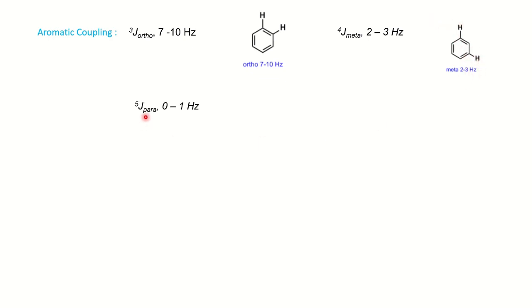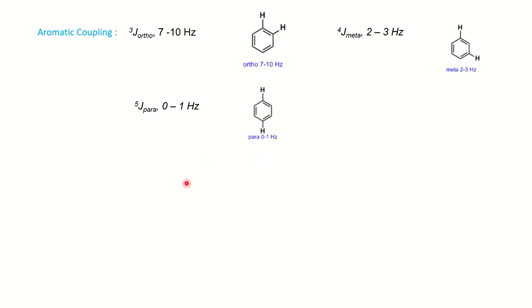Para coupling is a five-bond coupling, so it is weaker than meta — zero to one hertz. You can count the five bonds involved. So therefore you can distinguish aromatic isomers — ortho, meta, and para — based on proton NMR coupling constant values.